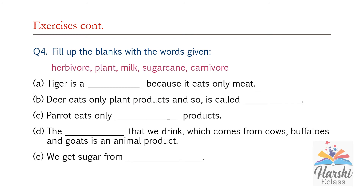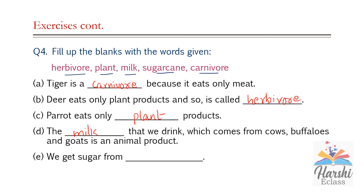Question number four: Fill in the blanks with the words given — herbivore, plant, milk, sugarcane, animal. First: tiger is a carnivore because it eats only the flesh of other animals. Deer eats only plant products, so it is called a herbivore. Parrot eats only plant products. The liquid that we drink which comes from cows, buffaloes, and goats is an animal product — milk. We get sugar from sugarcane.